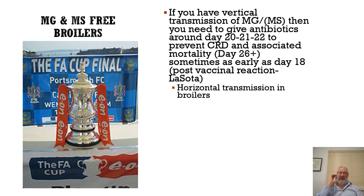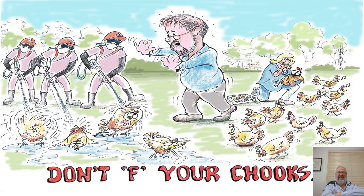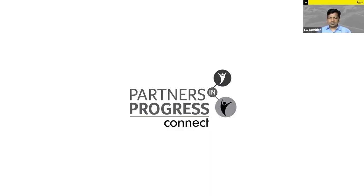MG and MS free broilers are the FA Cup of the chicken world. If you have vertical transmission of MG and/or MS, you need to give antibiotics around day 20 to 21 to prevent mortality, sometimes even earlier with LaSota. Horizontal transmission isn't that important in broilers because very small amounts of mycoplasma arrive that way — vertical transmission is much more important. Once you get control of MG you can stop your antibiotic programs, use stronger ND vaccines for better protection, avoid residues, and achieve a more sustainable system. Don't use F-strain on your chickens — thank you very much.